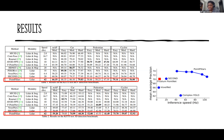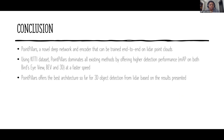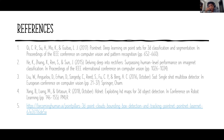In conclusion, PointPillars is a network and encoder that can be trained end-to-end on LiDAR point clouds. Using the KITTI dataset, PointPillars dominates all existing methods by offering high detection performance for mean average precision on both bird's-eye view and 3D, at a faster speed. PointPillars offers the best architecture for 3D object detection from LiDAR based on the results presented by the authors. The references helped clarify concepts not fully explained in the paper.